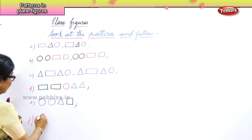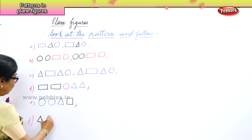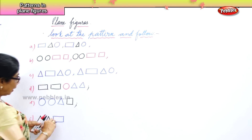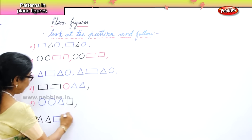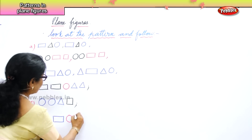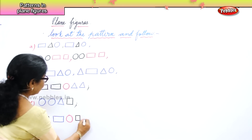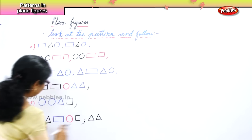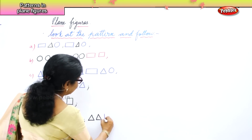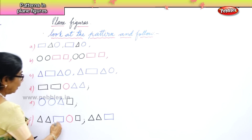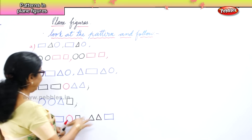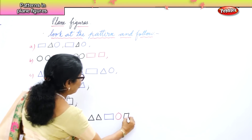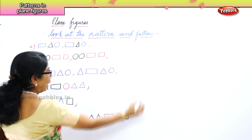Next we have here: I have given you a triangle, again triangle, then we have a rectangle, then a circle and a square. So what we need to do? We need to follow that — first 2 triangles, then square, then circle, go on. Circle and then you have the square. So like this is called looking at the pattern and following.